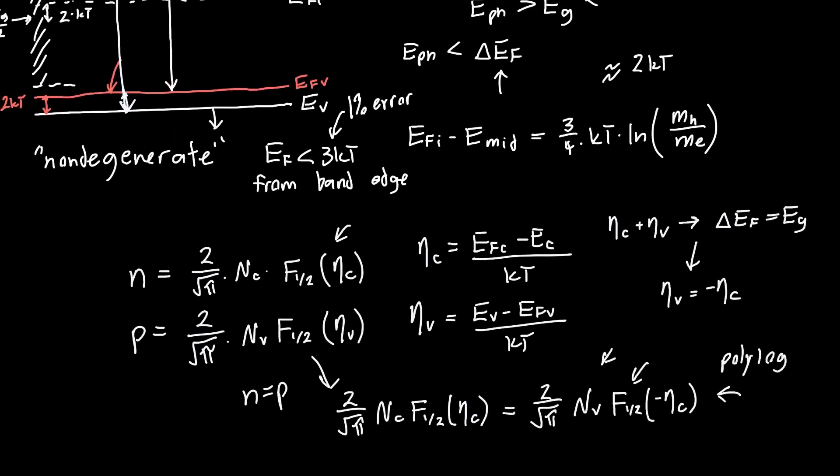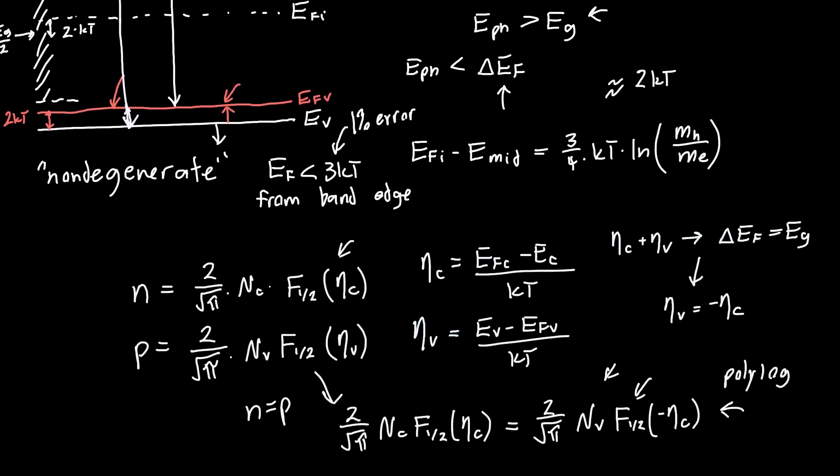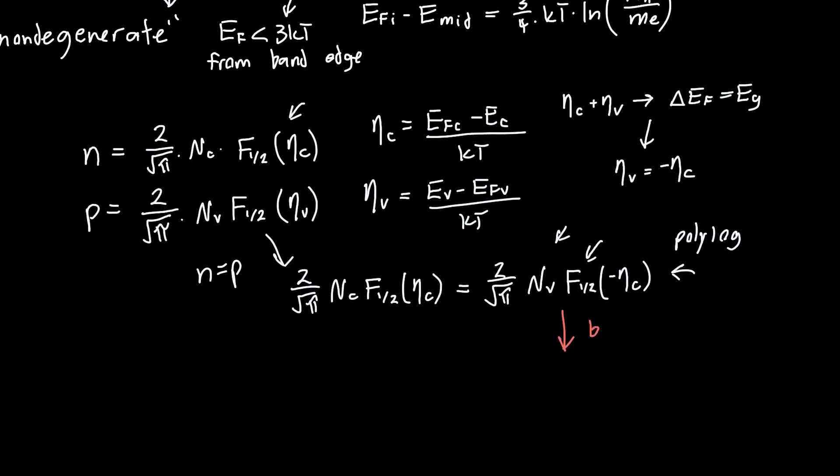Since this valence band Fermi level is above the valence band, we can somewhat reliably make the Boltzmann approximation. That turns this expression on the right just equal to nv times e to the minus eta c, because our Fermi Dirac integral f1/2 of some argument eta is just going to be approximately equal to root pi over 2 times e to the eta, or if we had minus eta, minus eta.